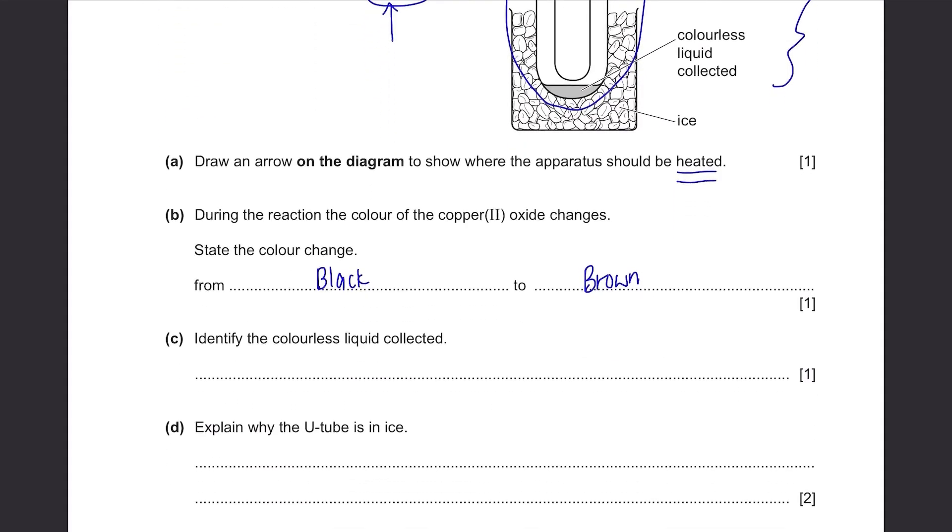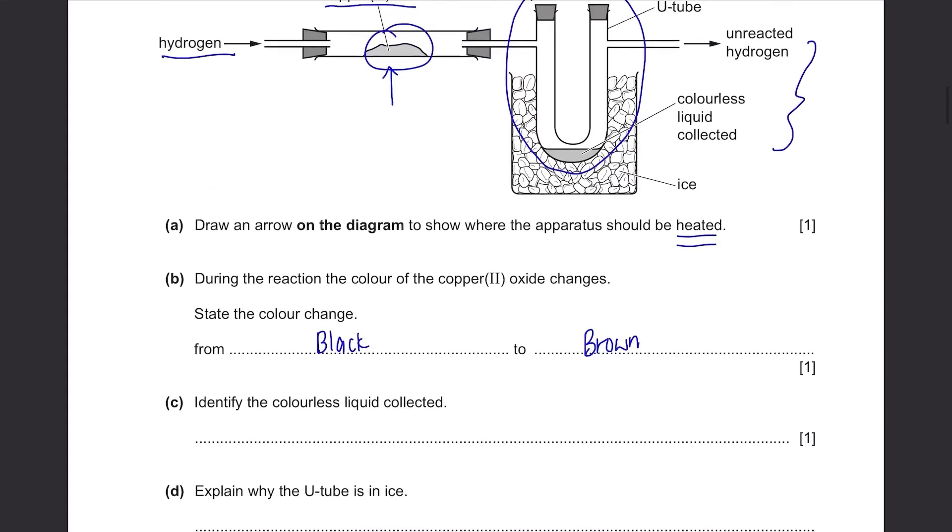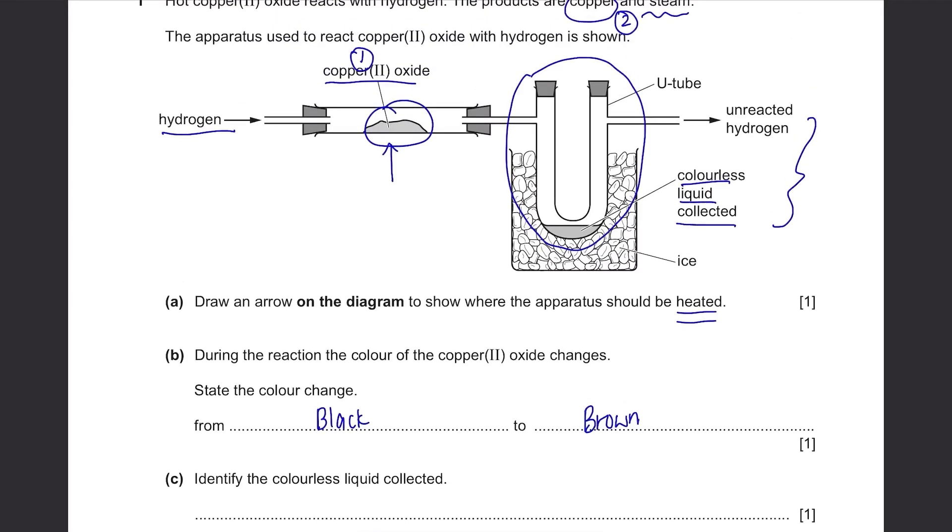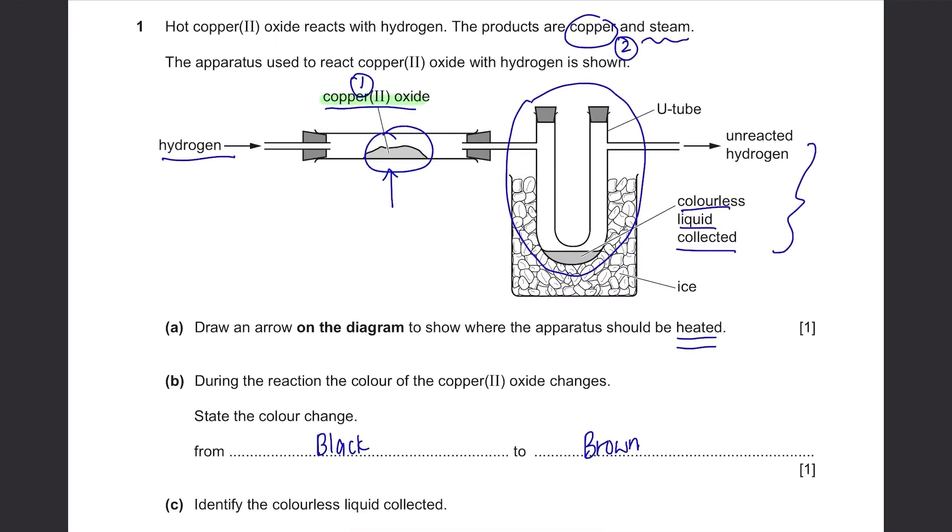Part C: Identify the colorless liquid collected. It's the one over here. Well if you react copper(II) oxide with hydrogen, you will get copper and steam. Notice that it's hydrogen, H2 and oxide, so obviously there's something related to oxygen. If you have H2 and oxide oxygen, you'll get water. So basically this liquid is water.